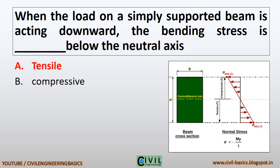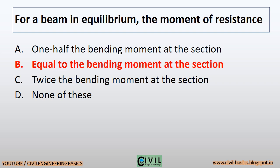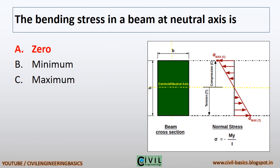When the load on a simply supported beam is acting downward, the bending stress is tensile below the neutral axis. For a beam in equilibrium, the moment of resistance equals the bending moment at the section. The bending stress in a beam at the neutral axis is zero.